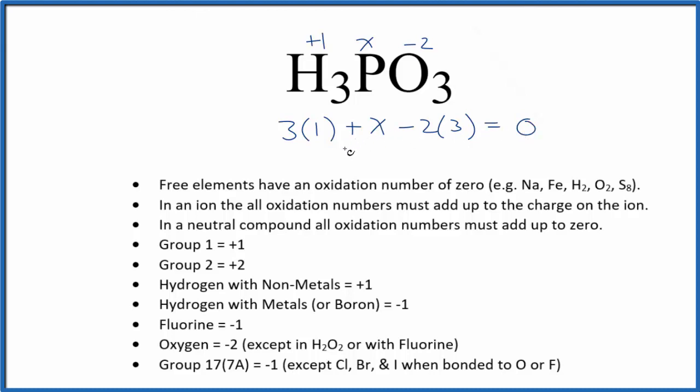Then we have X plus three and a minus six. So X minus three equals zero. And we could say X, that's going to equal a positive three. So the oxidation state for the phosphorus here in H3PO3, that's going to be a positive three.